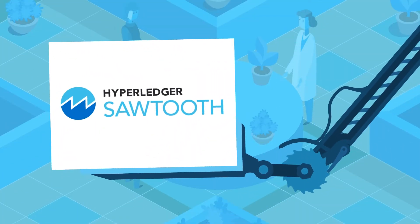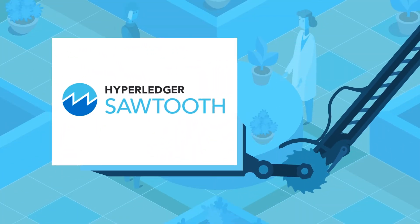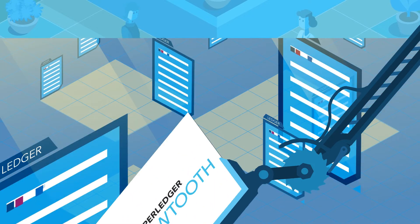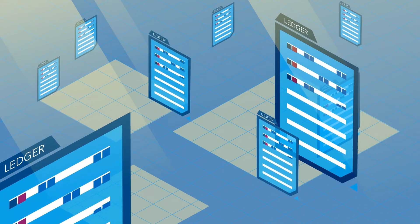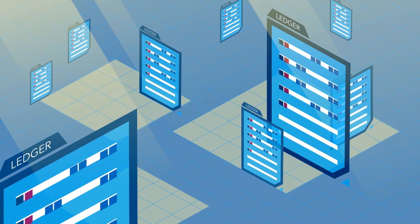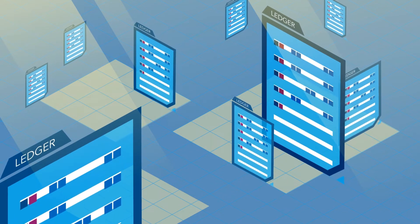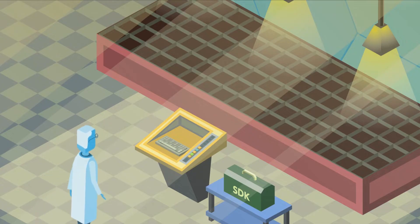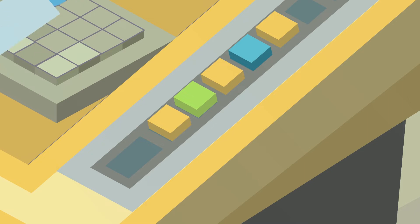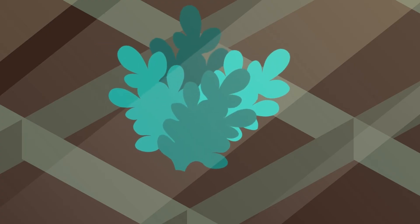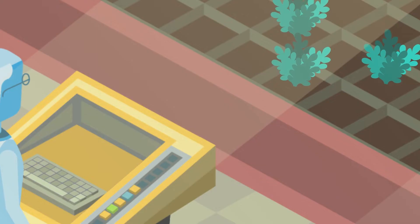Built from the ground up for enterprise use, the Hyperledger Sawtooth design philosophy targets development of decentralized ledgers and secure, scalable smart contracts. The Sawtooth security model uses a single node type, which simplifies deployment. Plenty of examples exist for both on-premises and cloud installations.